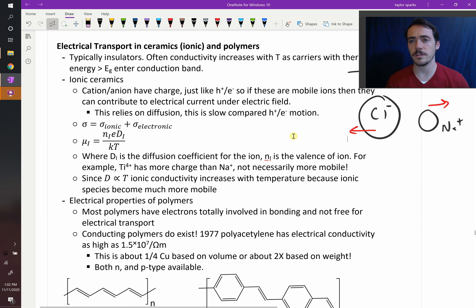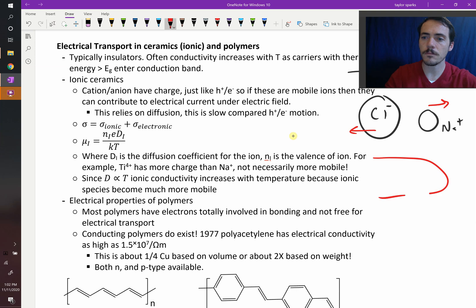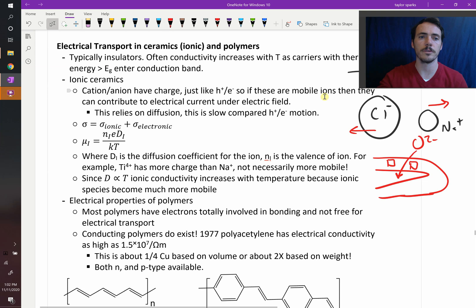We talked about this previously in the semester when we discussed YSZ. That was this material where we made sensors out of it because it had a bunch of oxygen vacancies, and that allowed oxygen ions, oxygen 2 minus, to travel through the material. You can make oxygen sensors and all sorts of really cool things with those.